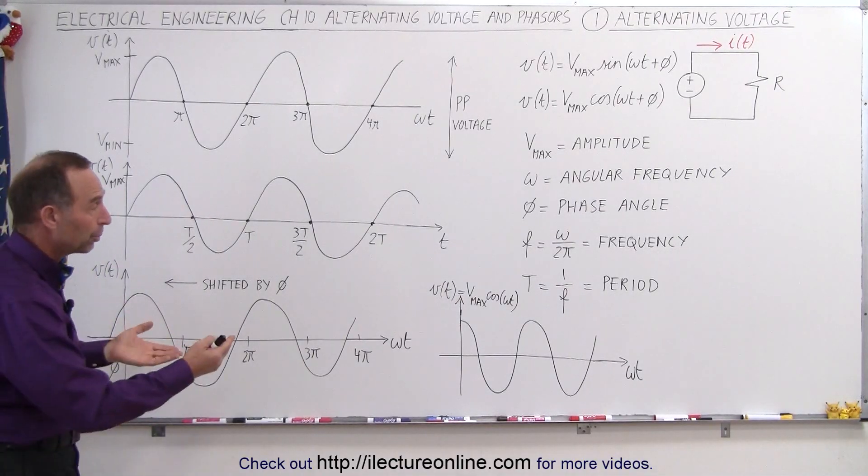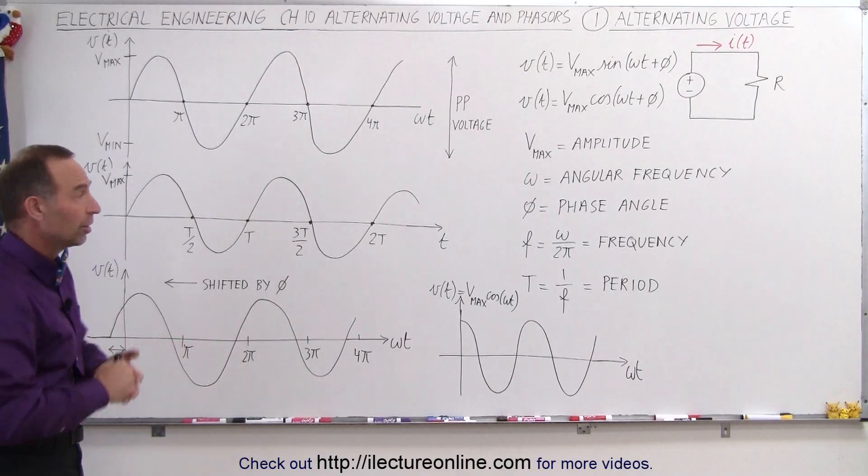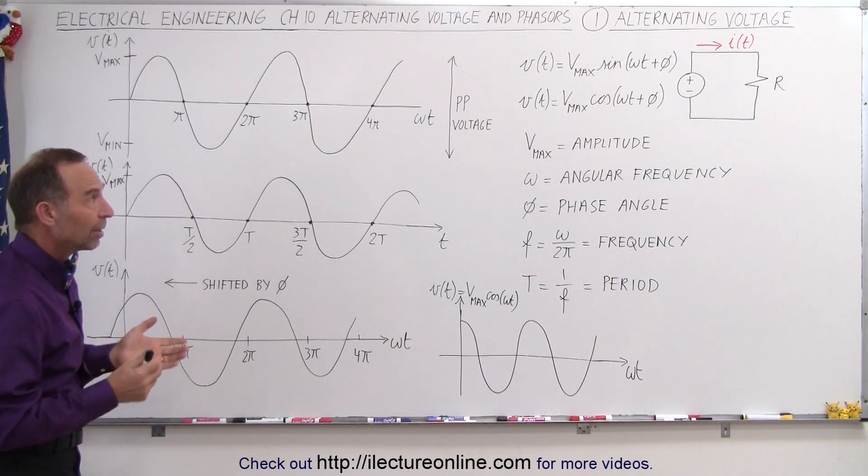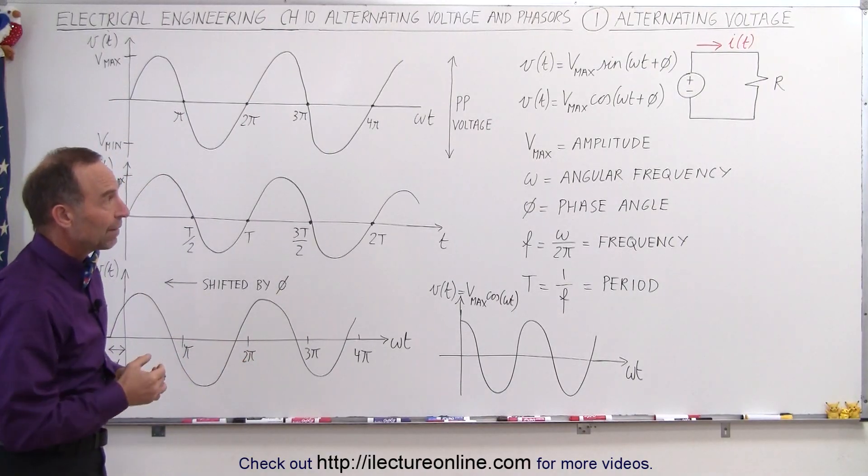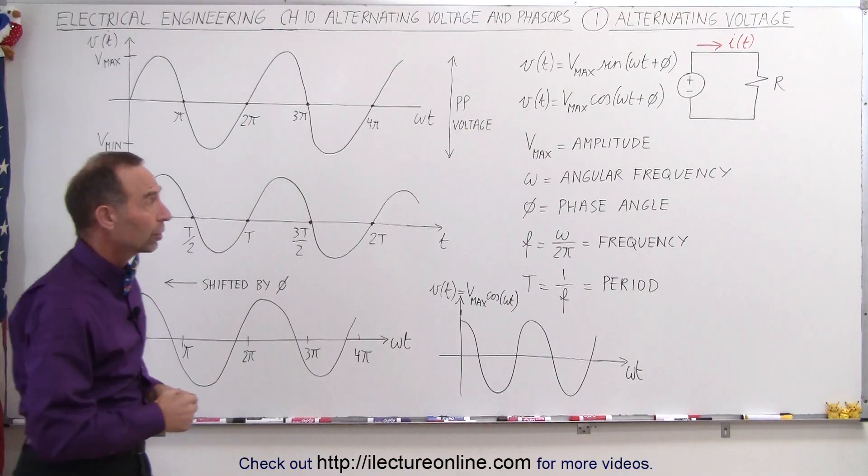Typically we use the one that's appropriate if we're given a particular starting point. So that's the basic concept of an alternating voltage source. And of course, if we have an alternating voltage source, we have an alternating current in the circuit.